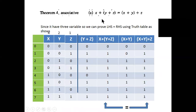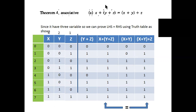Next theorem: the Associative theorem, proved using a truth table. We have three variables here. x plus (y plus z) equal to (x plus y) plus z.